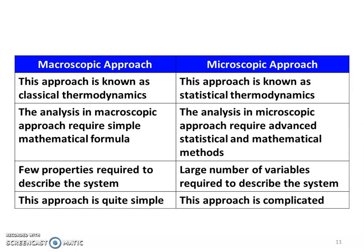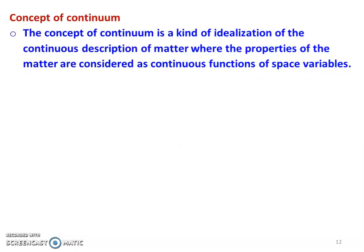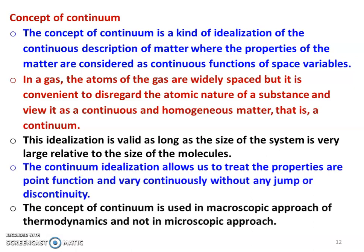We will study only classical thermodynamics, which focuses on the overall effect — not how individual molecules behave. In the macroscopic approach, known as classical thermodynamics, the analysis requires simple mathematical formulas and only a few properties to describe the system, making it simple. In contrast, the microscopic approach, known as statistical thermodynamics, requires advanced statistical mathematical methods and a large number of variables to describe the system, making it more complicated.